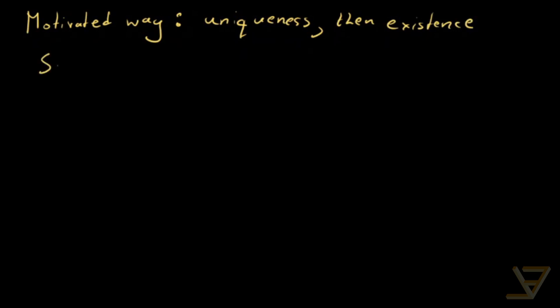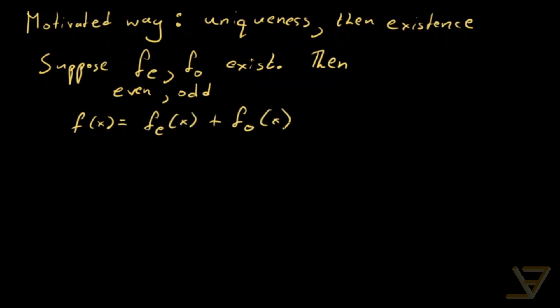So suppose f_e and f_o exist. Then it satisfies a couple of properties. Remember this is even and this is odd and that's going to be important. First of all, f of x is equal to f_e of x plus f_o of x. Right, because that was the definition. This is a decomposition, an additive decomposition.